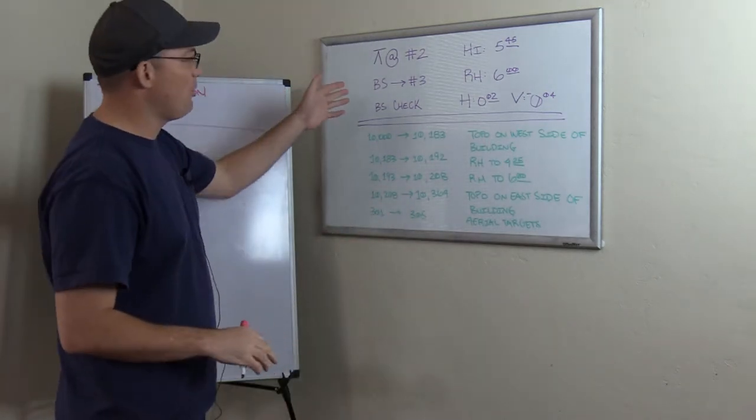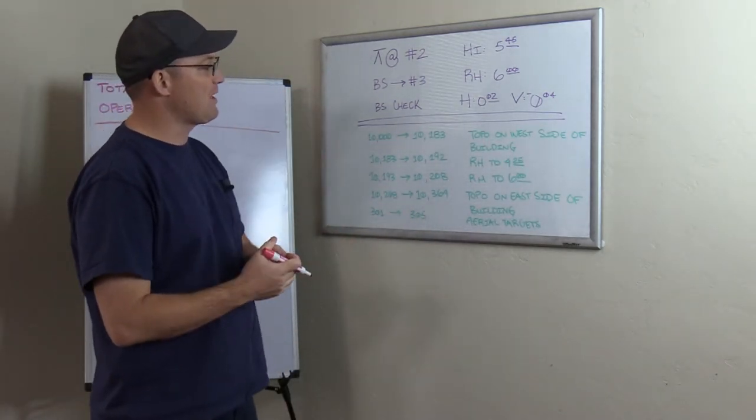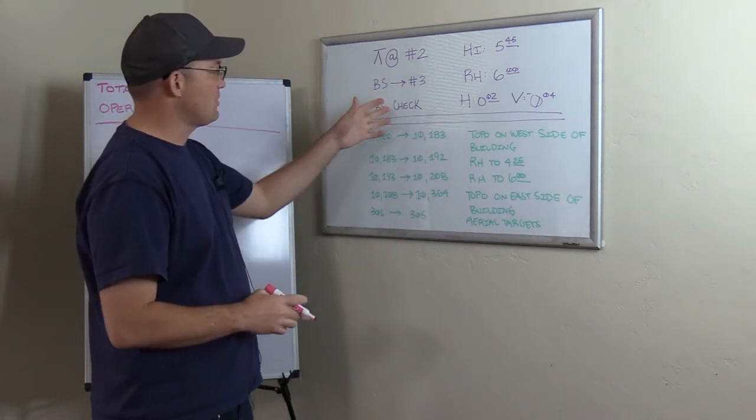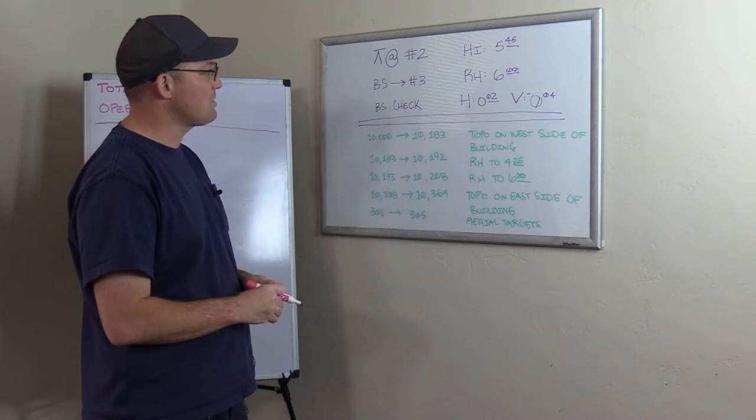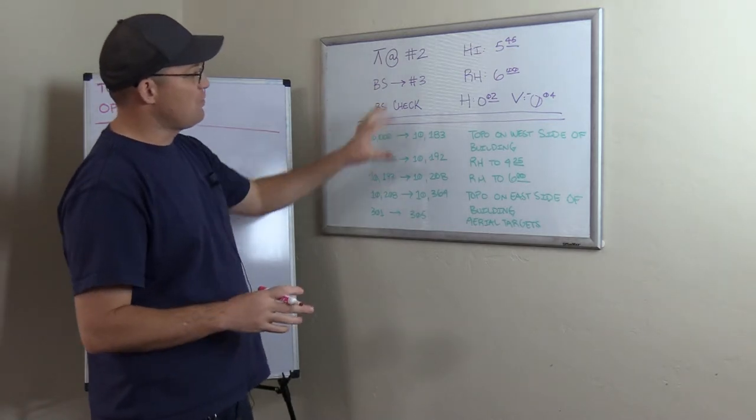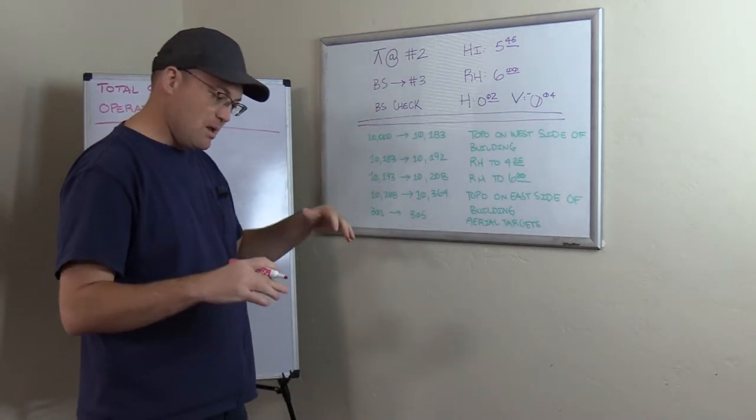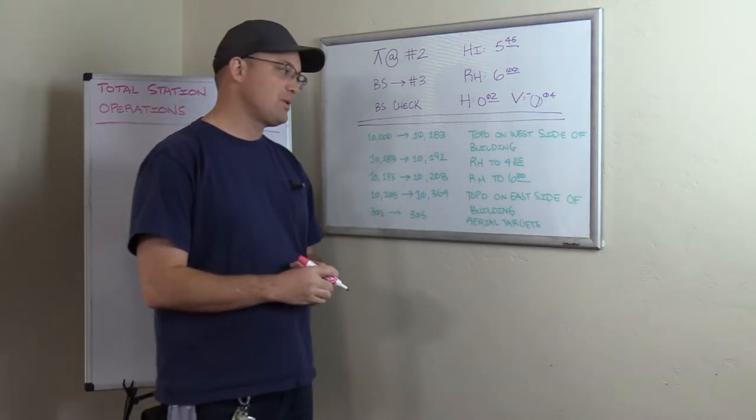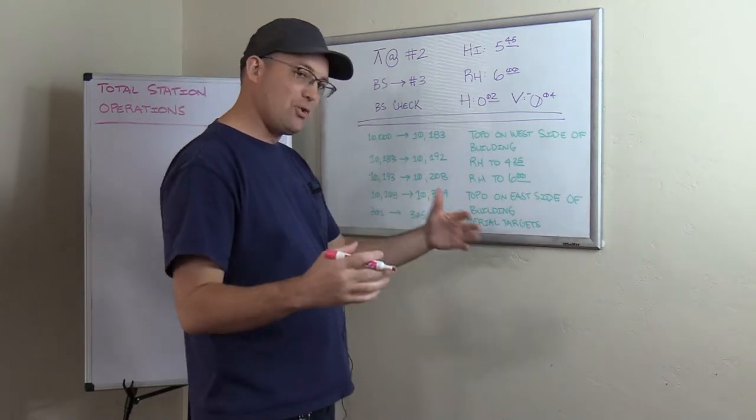So I have on the board here an example of some field notes that might come in from RH on a total station survey. This is a topo being done with a total station. And I wanna walk you through the two parts here. Different companies do field notes different ways. So we actually have what we call field note forms that the guys fill out. I know other companies do that.